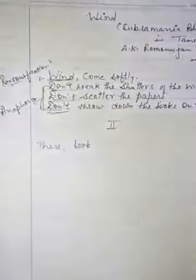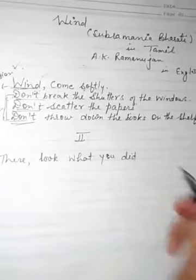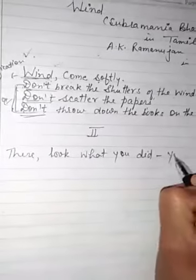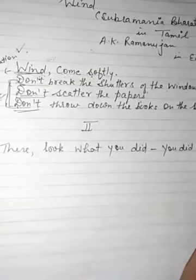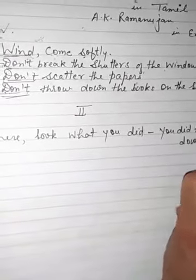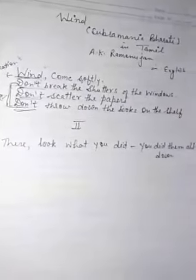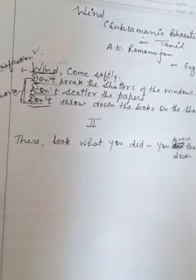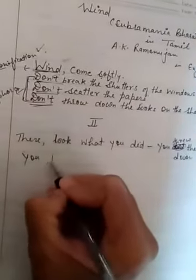Next stanza: There, look what you did. Again in the second stanza, the poet is talking to wind. Here wind is personified. He is in a complaining mood, talking about what you did - you threw them all down, you tore the pages of the book.